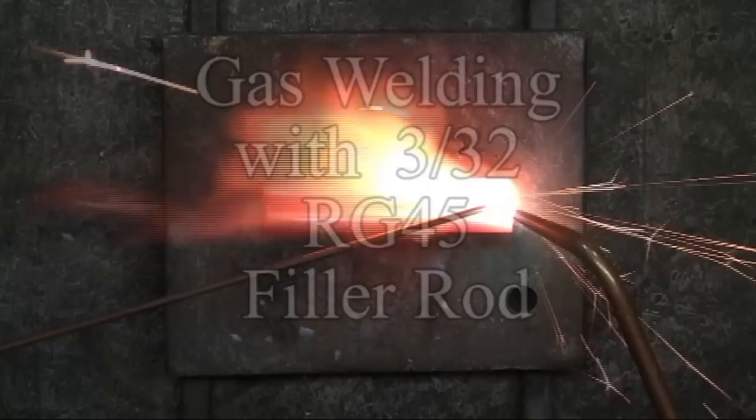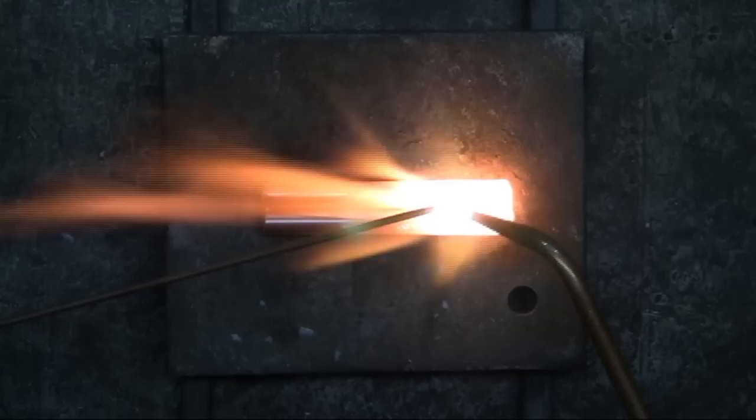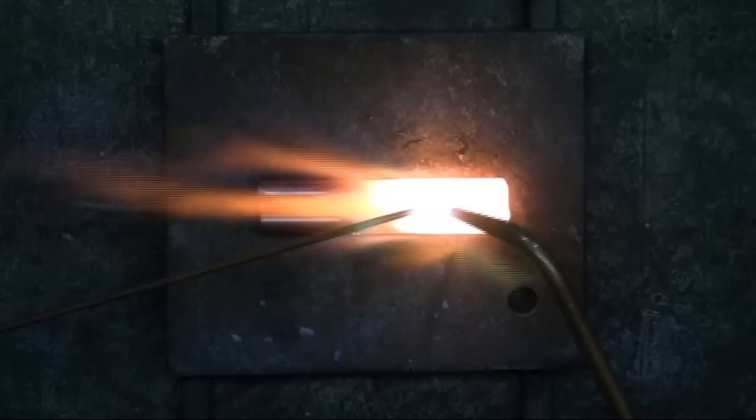In this example, I'll be using a 3/32nd RG-45 gas filler rod. It's a mild steel gas welding rod. Very standard. Heating both of the 5/16 inch rods, getting them up to the same temperature, and then melting the gas filler rod in between.